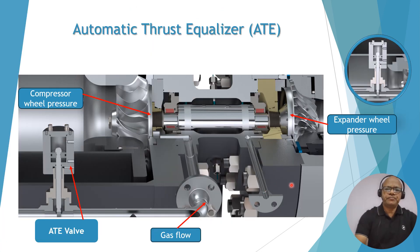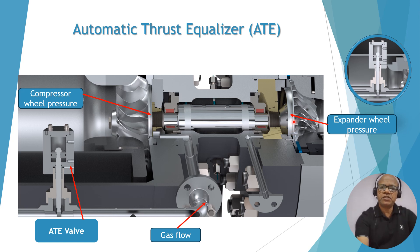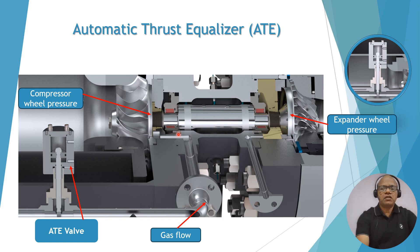Now looking at the cut view of the expander-compressor arrangement — this is the expander and this is the compressor, both connected to a single shaft. You can see the wheel pressure of the compressor and the wheel pressure of the expander. This is the thrust collar of the shaft, and this is the bearing for the compressor side and the expander bearing on the other side. There is a minimum clearance at the thrust faces of the shaft, where oil is circulating, creating oil thrust pressure on both the compressor and expander side bearings, both connected to the ATE port. The compressor wheel pressure — where process gas acts — is connected through the ATE to the suction of the compressor.